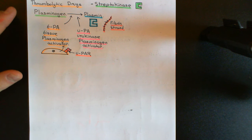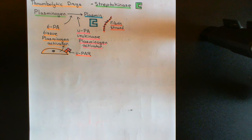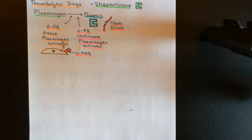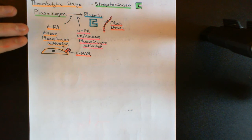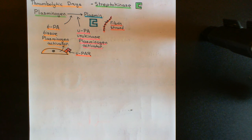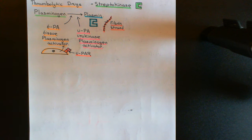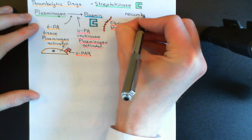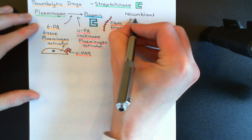We also have a number of examples of drugs which are recombinant versions of tissue plasminogen activator. Using biological engineering, we have managed to make another organism — most likely bacteria — produce an equivalent or recombinant version of our tissue plasminogen activator. These drugs can also be given by injection when we need a thrombus lysed, and they will go to the site of the thrombus and activate plasminogen to plasmin.